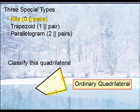If it's not classified as one of these three special types, we would just simply say it's ordinary. Be careful not to call it a regular quadrilateral — being regular is different than ordinary. The term regular means that a figure has all equal sides and all equal angles.